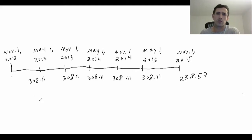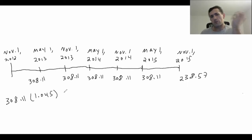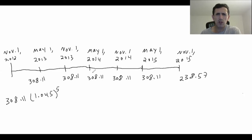From now on I will use annuity formulas since they make life easier, but for now let's double-check without them. The $308.11 deposit accrues one, two, three, four, five periods of interest. The six-month interest rate was 4.5%, which is 9% divided by two, so 0.045. So that first deposit is multiplied by 1.045 to the fifth. The November 1st, 2013 payment accrues four periods of interest. We keep going until the last $308.11 deposit accrues one six-month period of interest.